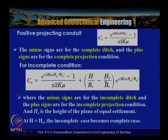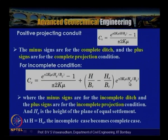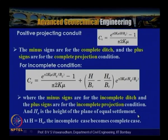When h equals he (height of embankment equals height of equal settlement plane), the incomplete expression reduces to the complete case expression. At h = he, the incomplete condition converges into the complete condition.